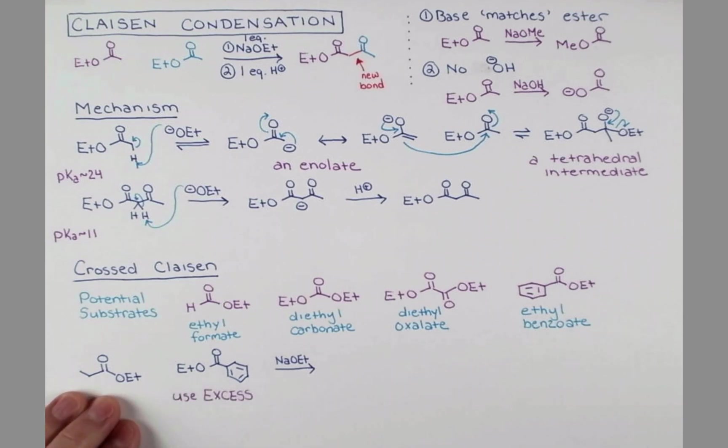In our first step, the ethyl propanoate enolizes. There are many molecules of the ethyl benzoate around because we're using an excess. Just going to abbreviate our ring as Ph, since it's easier to write. The enolate attacks the carbonyl, pushing the electrons onto oxygen, and forming our tetrahedral intermediate.